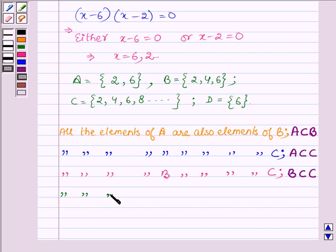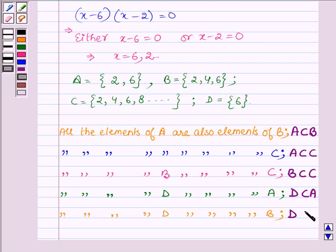All the elements of D are also elements of A. So D is a subset of A. Similarly, D is a subset of B.